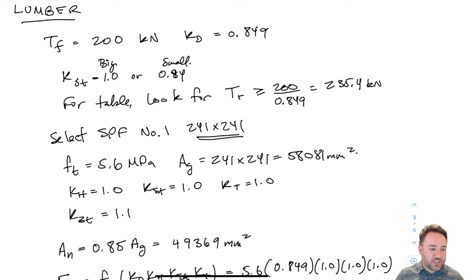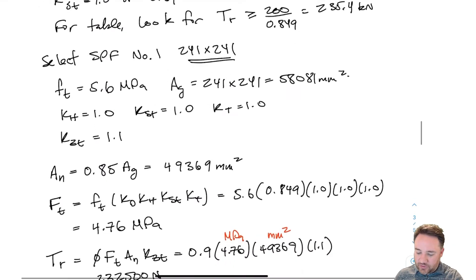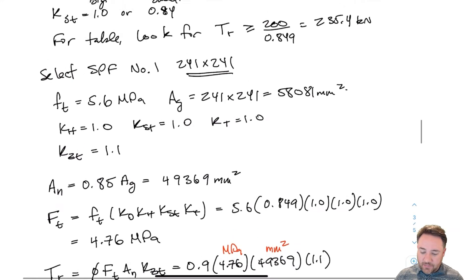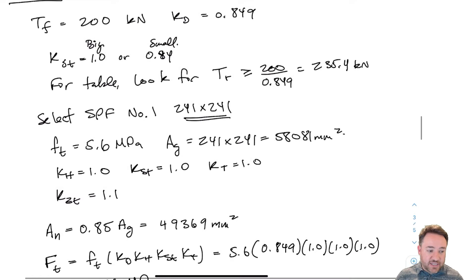Then we went through for lumber, and for KD of 0.849 and TF of 200, we used the design tables to pick a design member taking into account all of the different reductions that are not in those design tables.